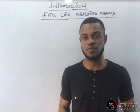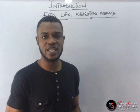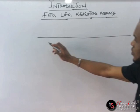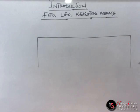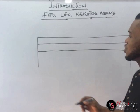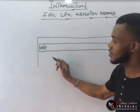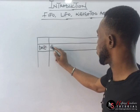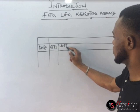The first thing is how to draw the table. If you are given a question under the FIFO, LIFO, or weighted average, you must present it in a tabular form. So we have our dates. Your line comes down. We always deal with quantity, unit price, and amounts. We have the quantity, we have the unit price, and then we have the amounts.